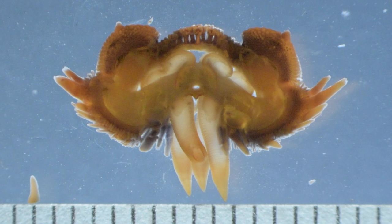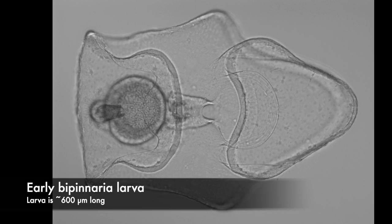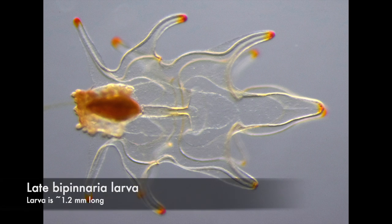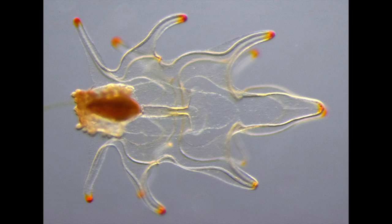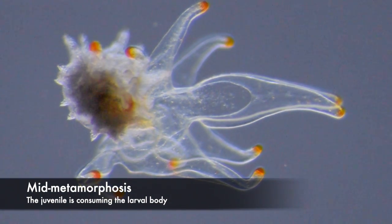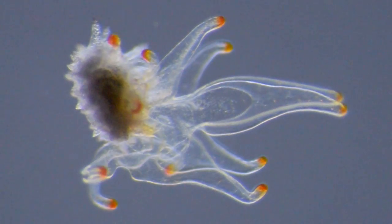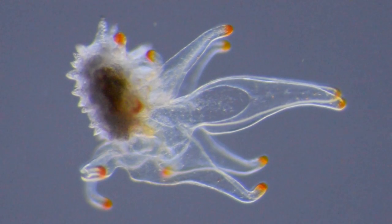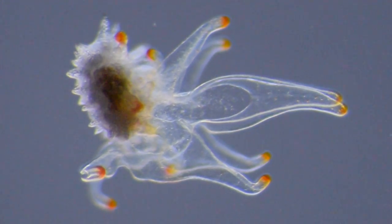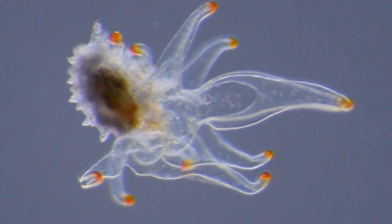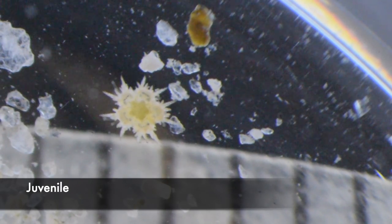You can induce Astropecten to spawn just like Patiria. Here's an early bipinnaria larva. These do not make brachiolar arms, so the bipinnaria is the only larval stage. Here's a late bipinnaria with a juvenile forming at the posterior end; at metamorphosis, that juvenile sometimes eats the larval body — which is what it's doing here. And here is a recently metamorphosed juvenile.